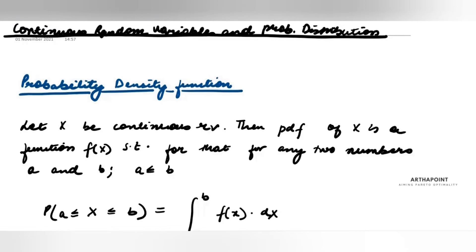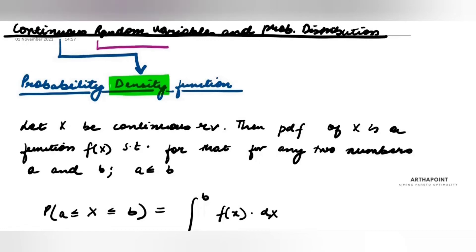For a continuous random variable we always talk about the probability density function. You will see the word 'density' coming only for continuous random variables, and you will see the word 'probability mass function' used for discrete random variables.